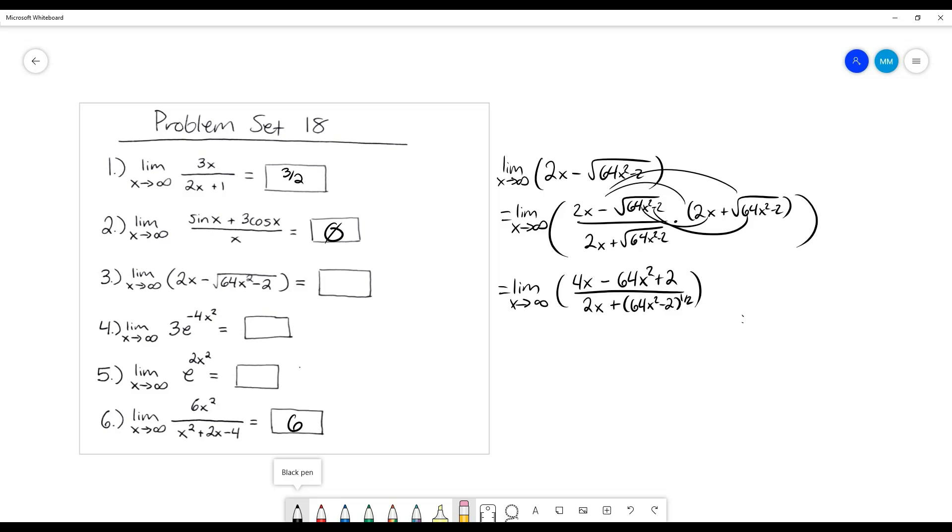Which means that we would be approaching infinity, except we have to pay attention to the sign here. This is a negative. We pay attention to the sign of our highest power. So that is a negative. So we're approaching negative infinity. We're going into the negatives much faster than we are being divided by.